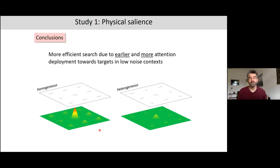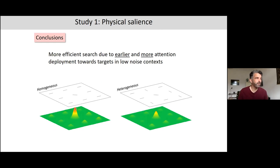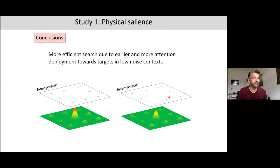This tells us something important about the priority map. By simply changing the background noise level, we see different performance, explained by multiple factors: more attentional capture when there's high noise, later suppression when there's high noise, and later target enhancement when there's high noise. So noise affects all three attentional sub-processes simultaneously.